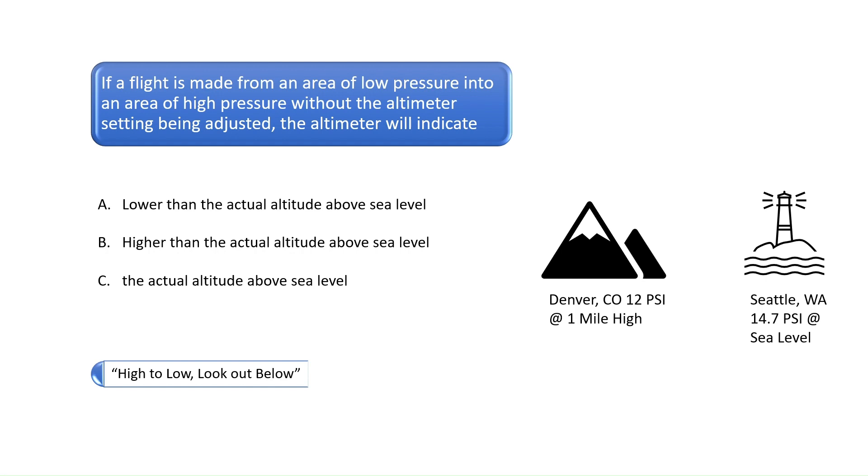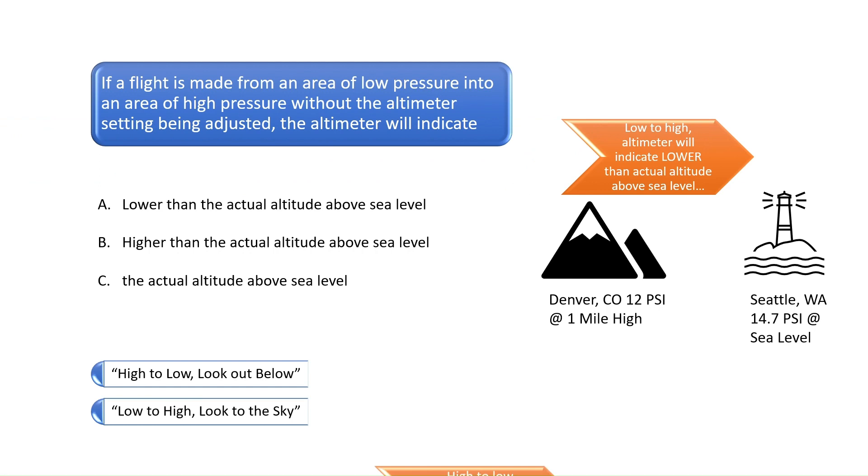One way to remember how air pressure affects altimeters is high to low, look out below, meaning that if you fly from an area of high pressure to low pressure without adjusting the altimeter setting, then your aircraft would be at a lower altitude than the altimeter is reading, and thus the aircraft's altimeter would indicate an altitude higher than the actual altitude above sea level.